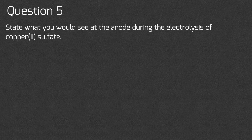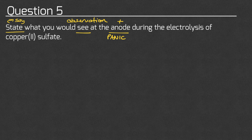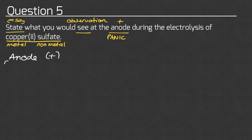Question five asks us to state what you would see at the anode during the electrolysis of copper sulfate. State means say, but for this question you still have to do a little bit of working out. The question asks for an observation. We know from PANIC that the anode is the positive electrode. For copper sulfate, copper is the metal and sulfate is the non-metal. The anode is where the non-metal goes because it's negative, so we're looking at what the non-metal will form.